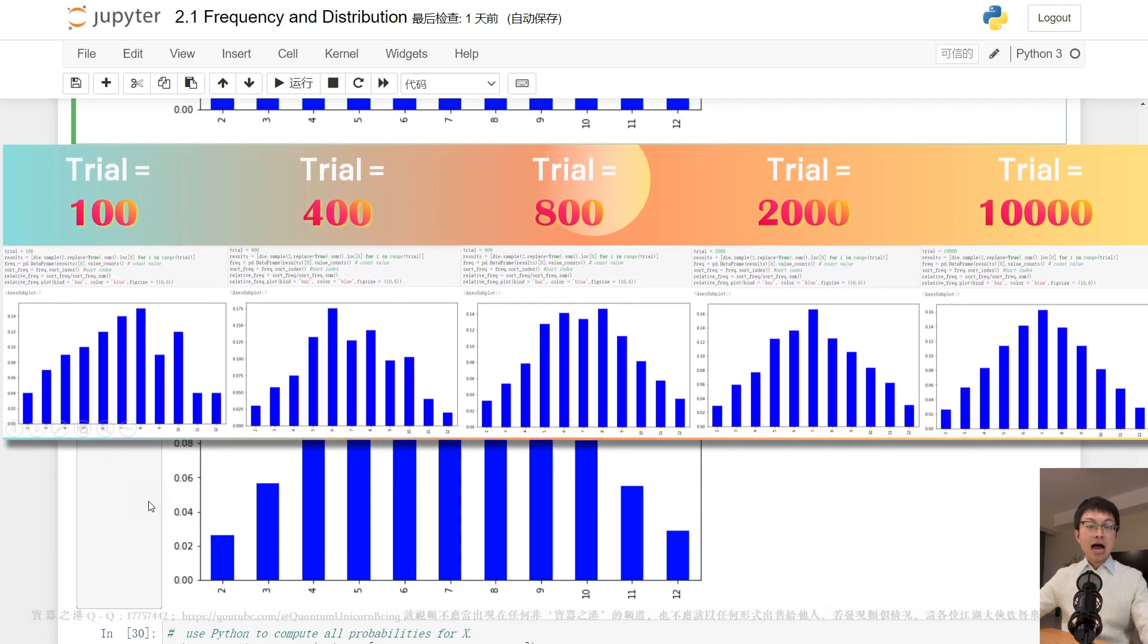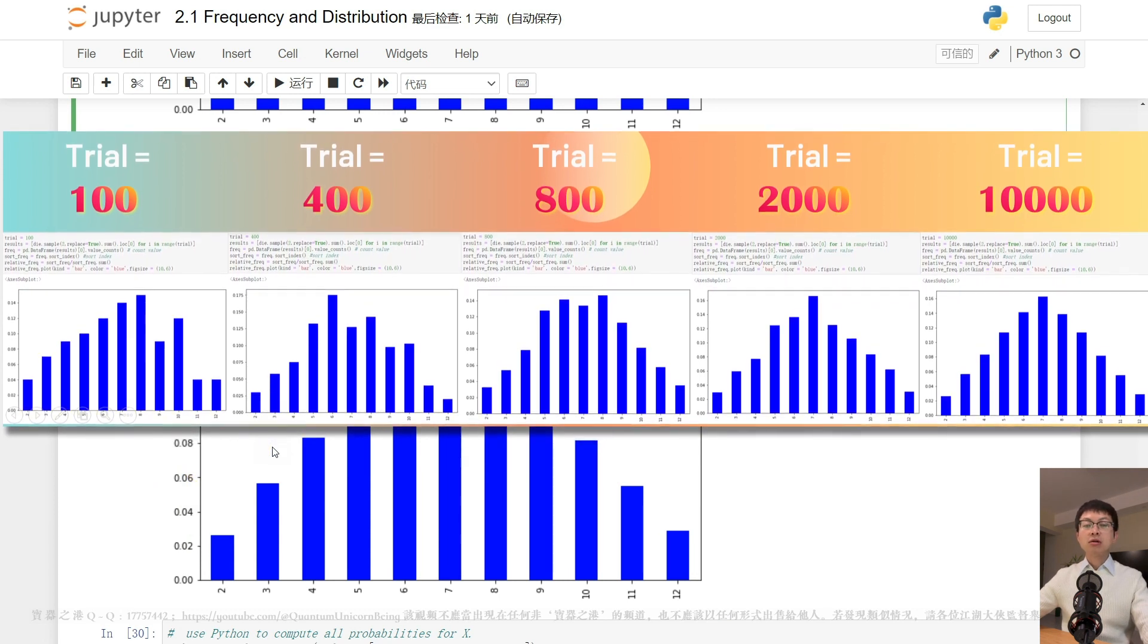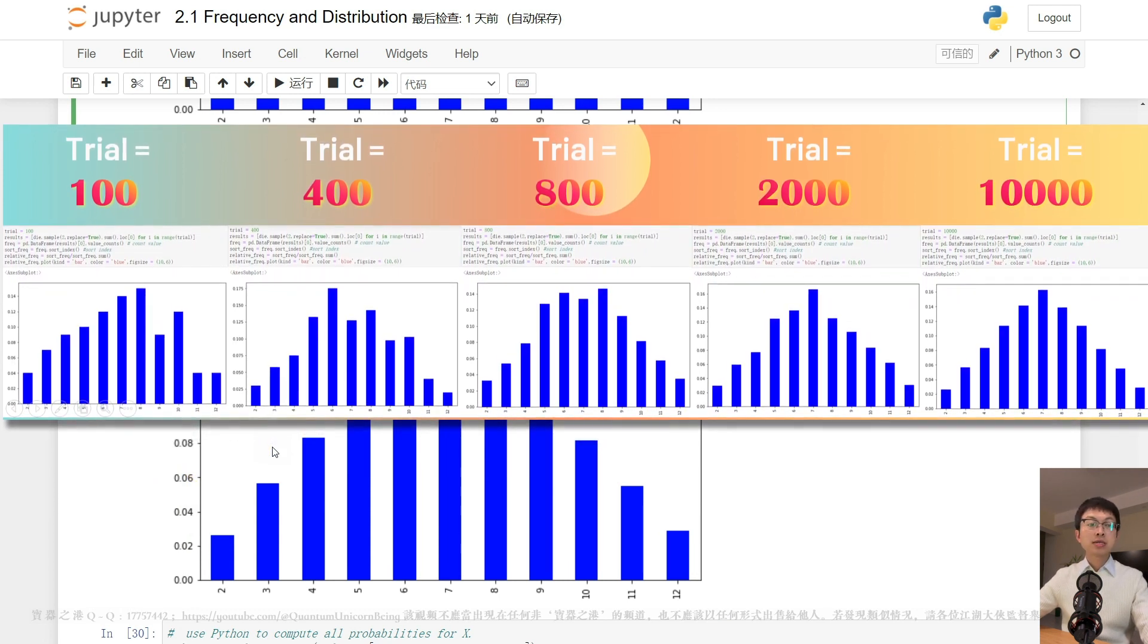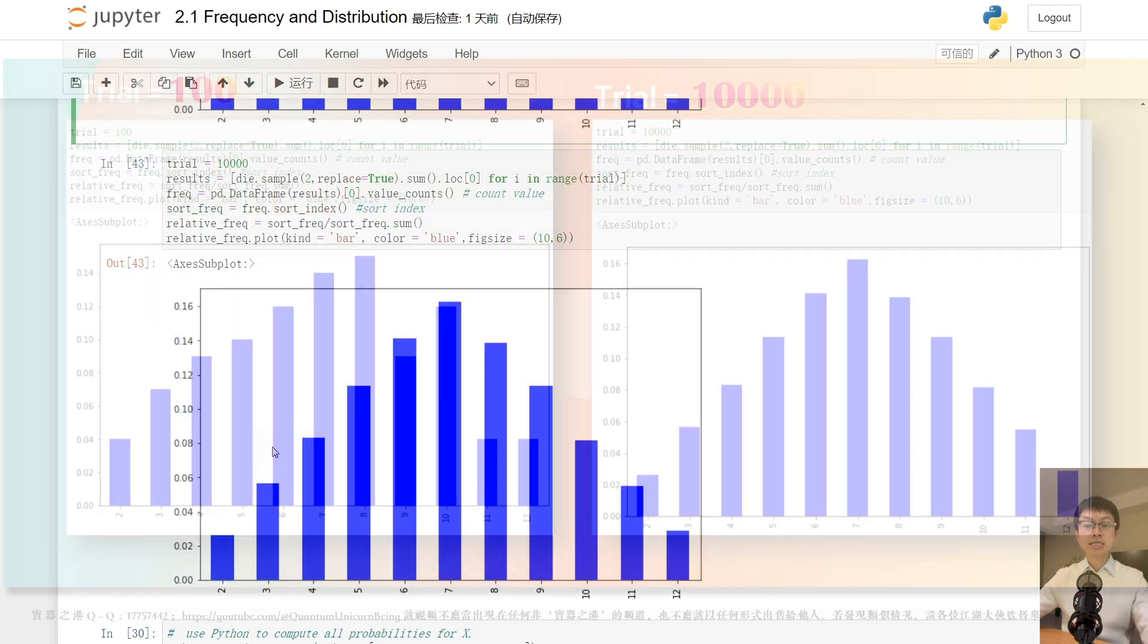And obviously, as the number of trials increases, the bar chart converges towards a limit, and the relative frequency becomes more and more stable.